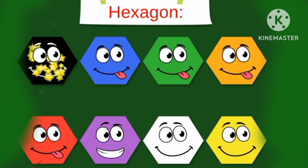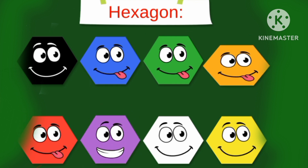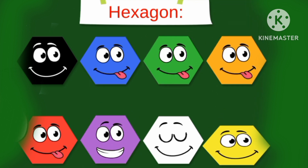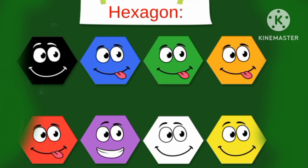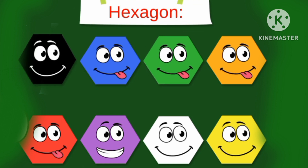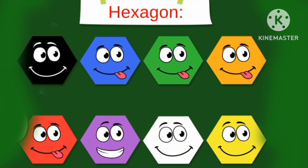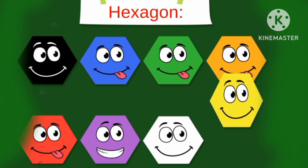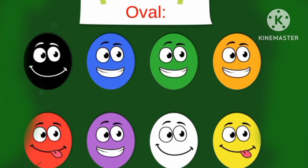Hexagon. Black hexagon, blue hexagon, green hexagon, orange hexagon, red hexagon. Purple hexagon, white hexagon, yellow hexagon. H-E-X-A-G-O-N. Hexagon. Over black, over blue, over green, over orange.